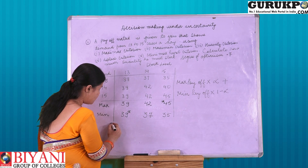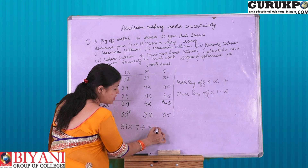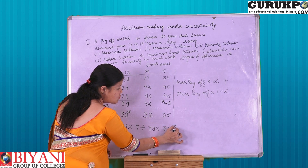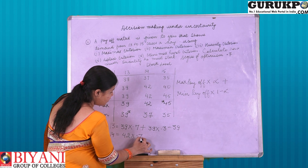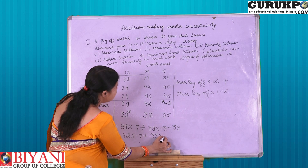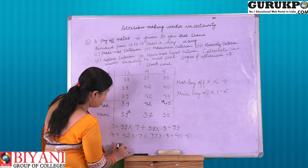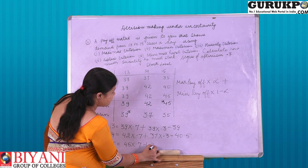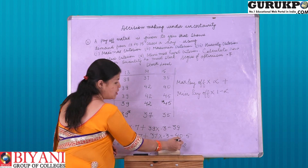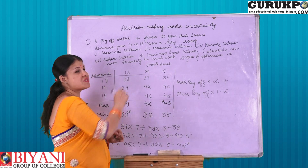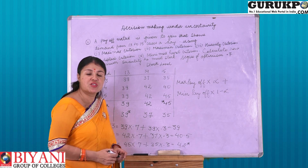For the 13 stock level: maximum value 39 × 0.7 + minimum value 39 × (1 − 0.7) = 39 × 0.7 + 39 × 0.3, which comes to 39. For 14 stock level: maximum value 42 × 0.7 + minimum value 37 × 0.3, which comes to 40.5. For 15 stock level: maximum value 45 × 0.7 + minimum value 35 × 0.3, which comes to 42. The maximum value from amongst these is 42, so as per Hurwitz criteria, the decision maker would like to stock level 15 to maximize profit of 42 rupees.